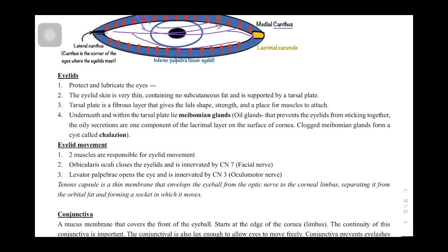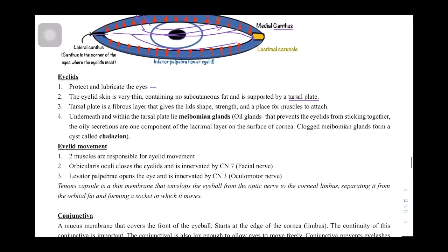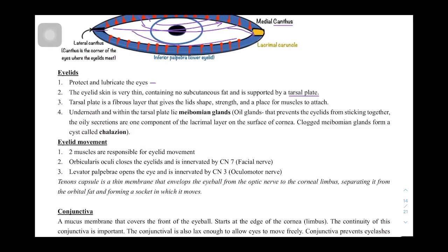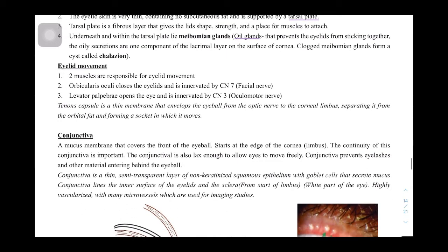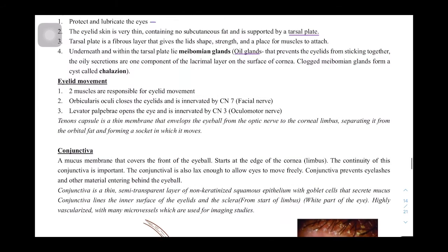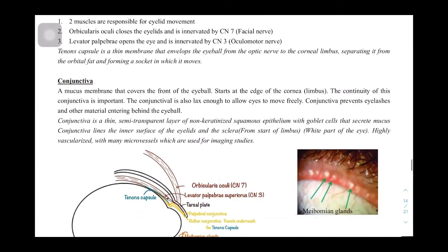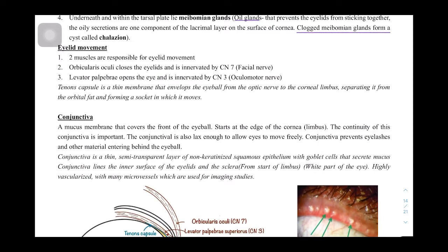The eyelid skin is very thin, containing no subcutaneous fat, and is supported by a tarsal plate. Underneath and within the tarsal plates lie the meibomian glands — sebaceous glands that prevent the eyelids from sticking together. Their oily secretions ensure the eyelids don't stick. If there is a clogged meibomian gland, that condition is called a chalazion, which we will discuss as a disease of the eyelids.